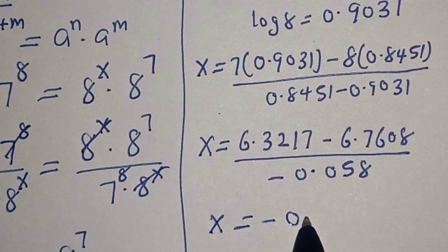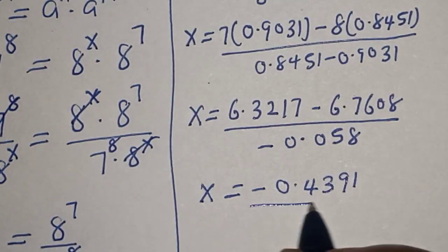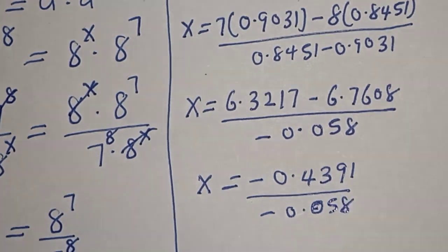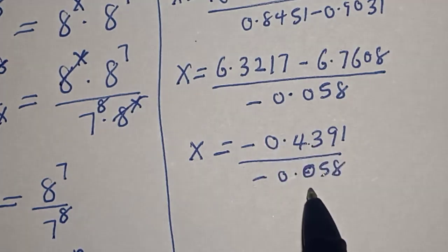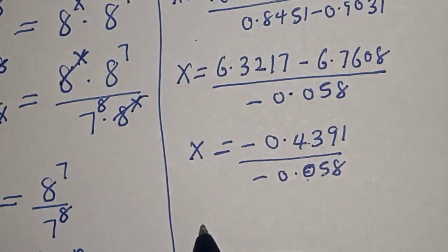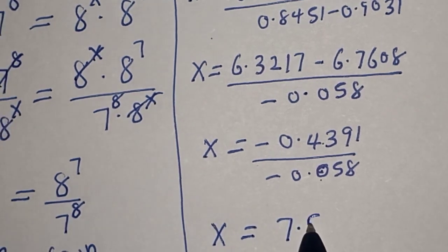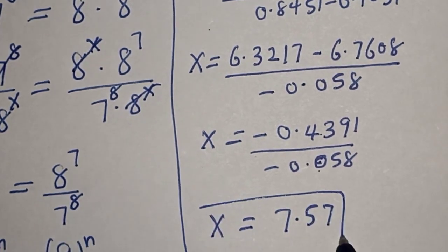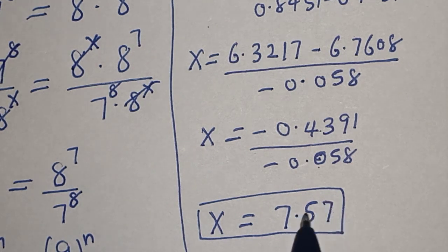Then x is equal to negative 0.4391 divided by negative 0.058. Dividing negative 0.4391 by negative 0.058, we get x is equal to 7.57. That is our final answer. Before you leave, like, share, comment and subscribe. Thank you, bye bye.